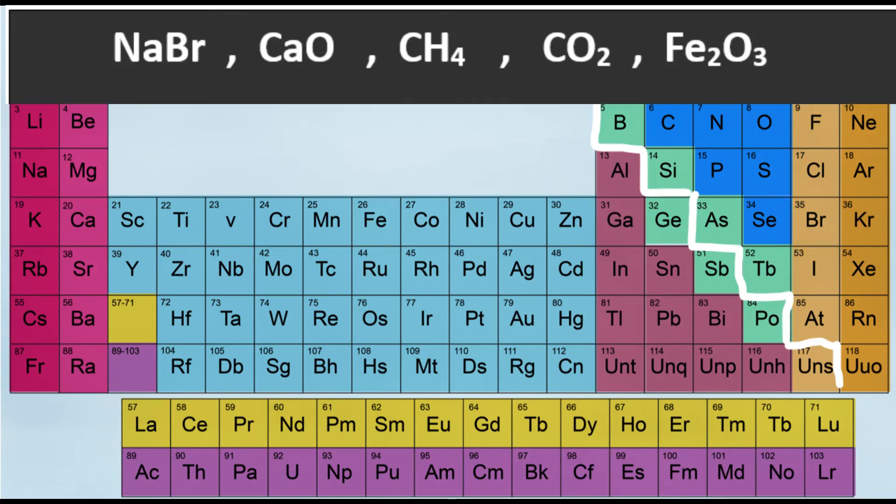In the first compound, Na is metal and Br is non-metal so this is ionic compound. Carbon dioxide: carbon and oxygen are both non-metals so this is not ionic compound.